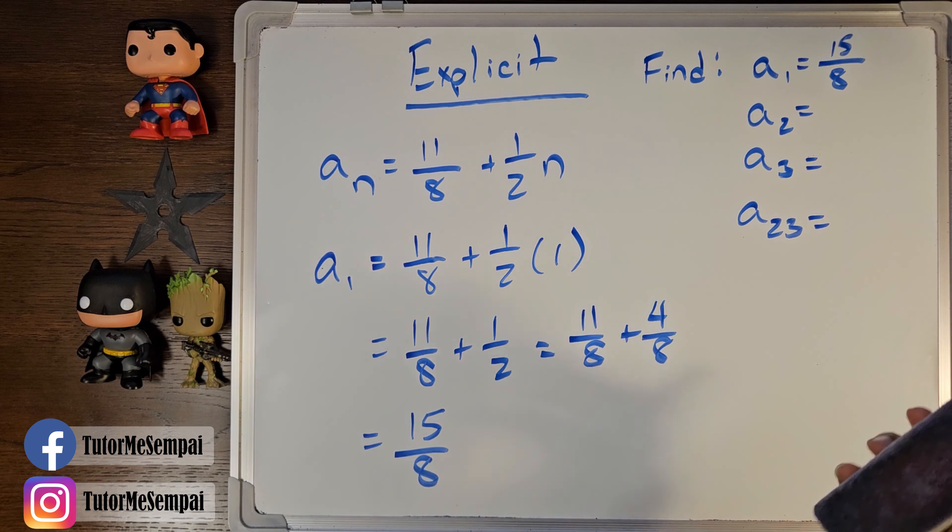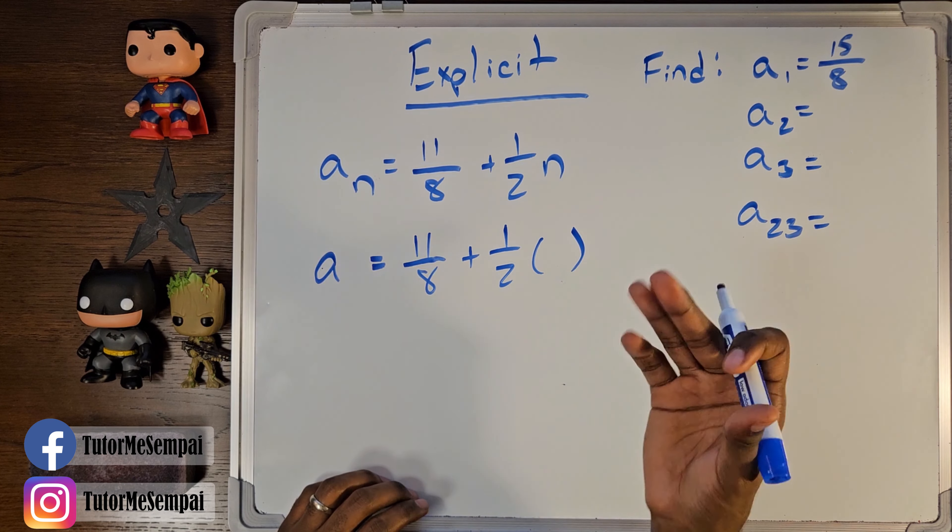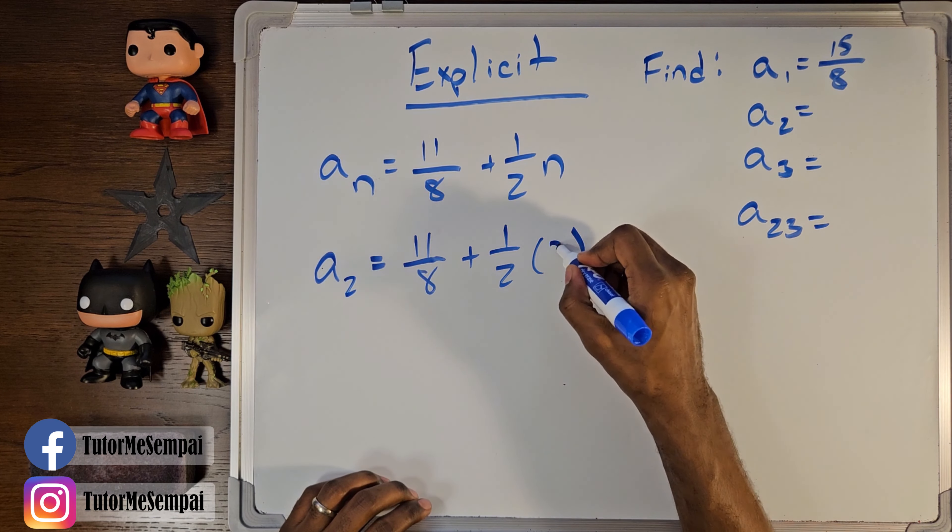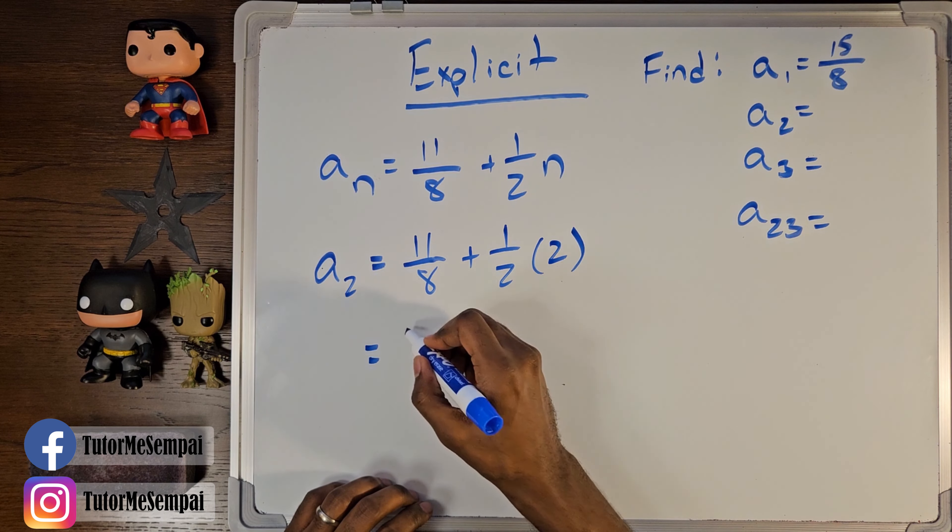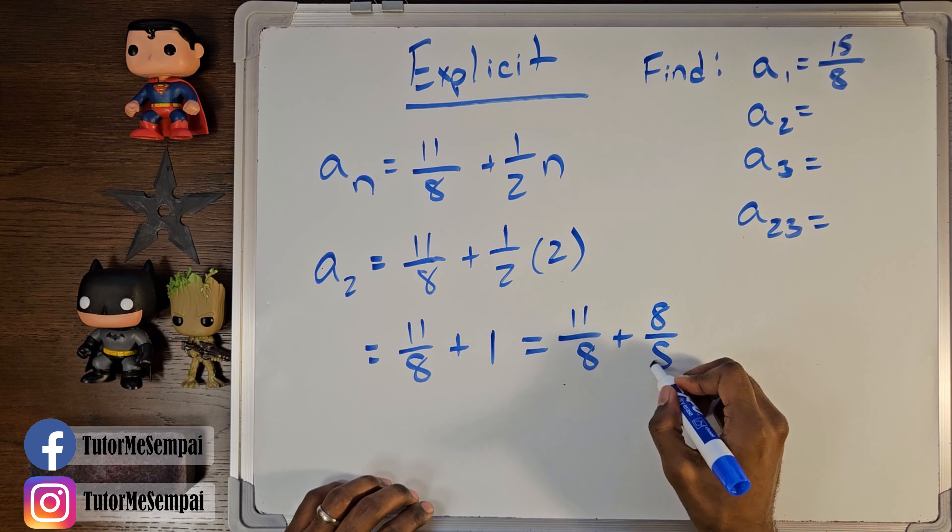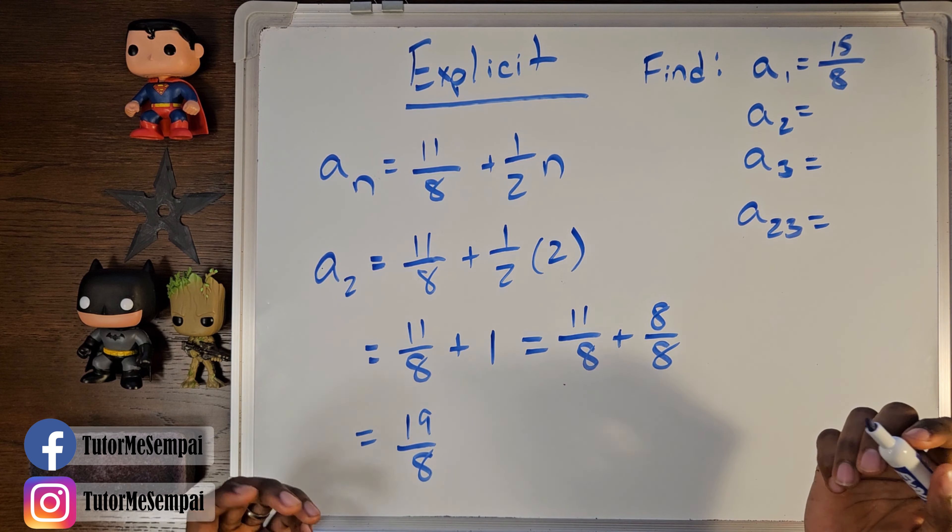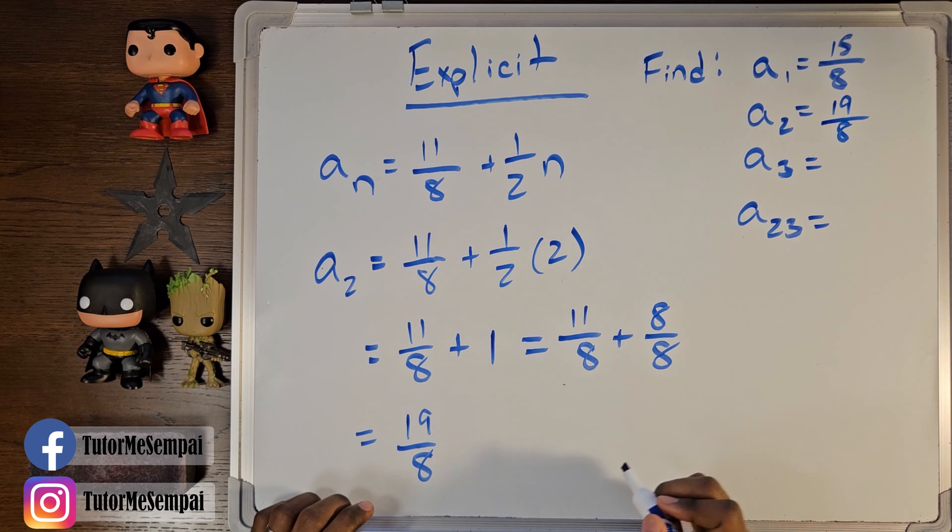Now, we do the same thing for our a sub 2. Wherever we had our n, or in previous case, our 1, we're now going to put a 2. And when we simplify this, we're going to get the following. And this simplifies to, which gives us a final result of, so our a sub 2 is going to be 19 over 8.